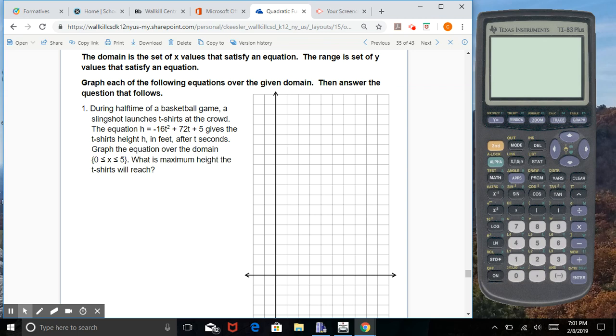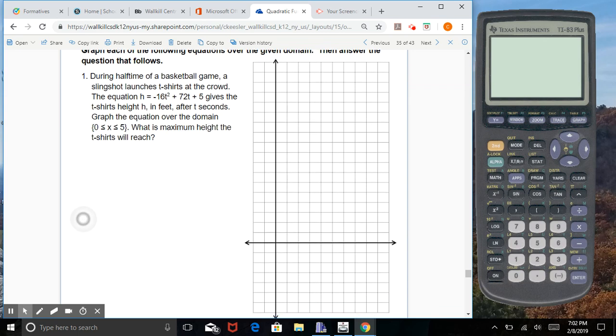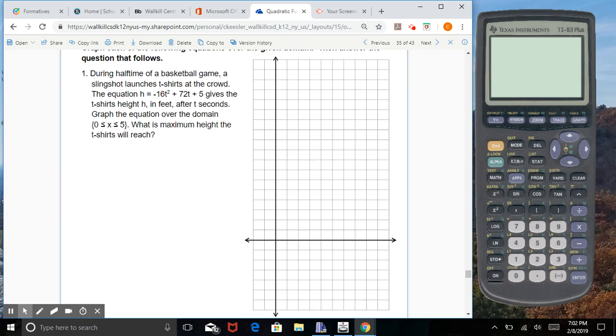In this case, the domain is given that they want us to graph the function over, which really helps us out a lot. But in future cases, that domain will not be given, and you will have to search on your calculator for when the function will reach back down to the x-axis. So you're graphing it over the real set for the domain, when the function will be in the air over a positive set of time. Here, we're going to go right into pulling up the equation in our table of our calculator.